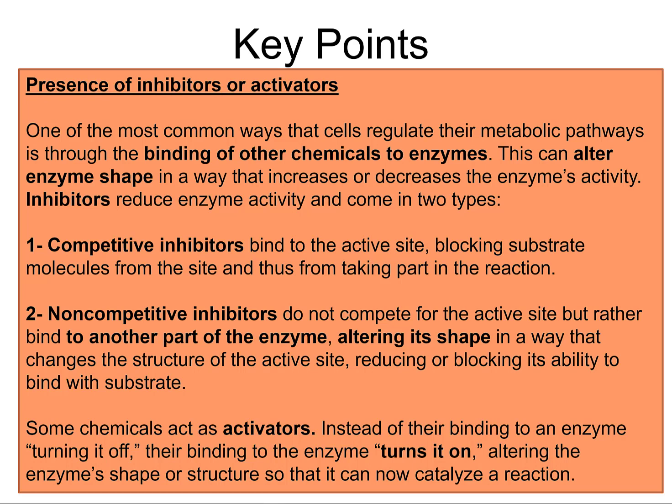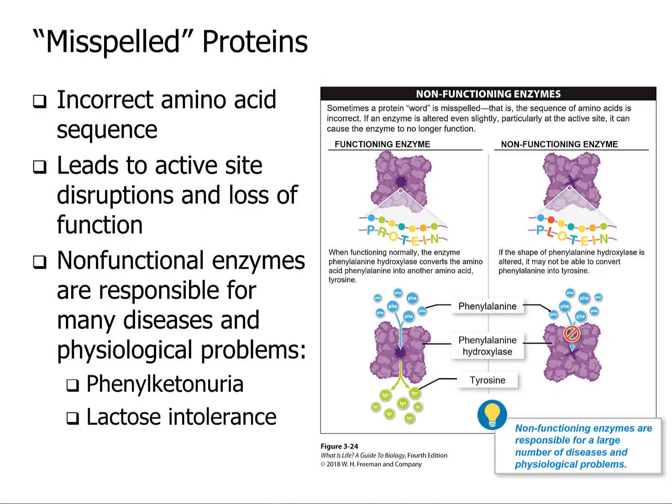Your body needs to recreate that neurotransmitter — endorphins. Some chemicals act as activators instead: rather than binding and turning an enzyme off, they turn it on. So we've talked about pretty much all aspects of that kind of control.